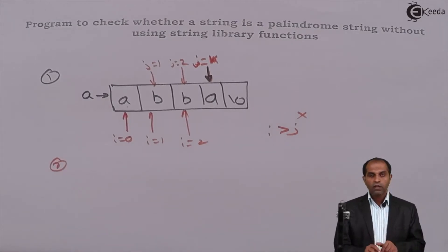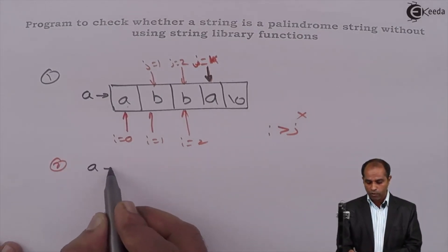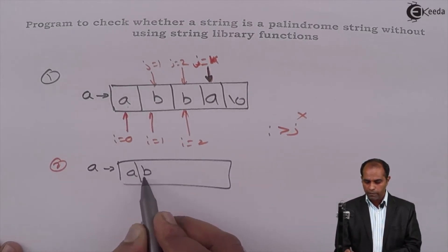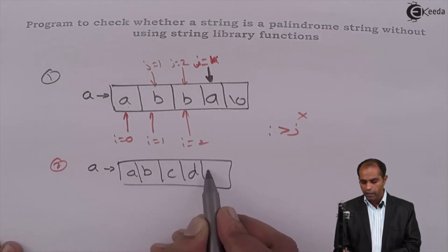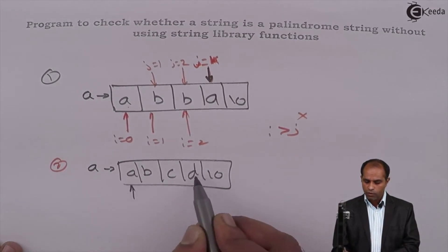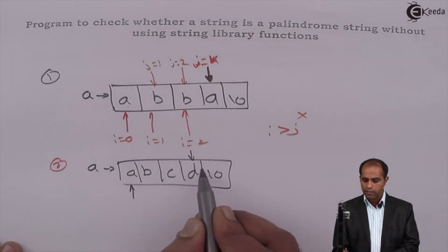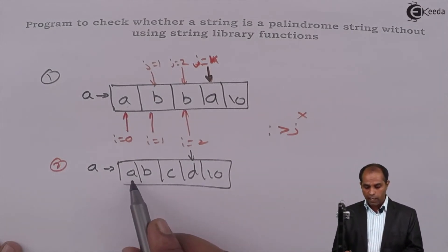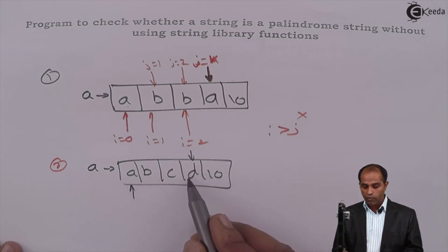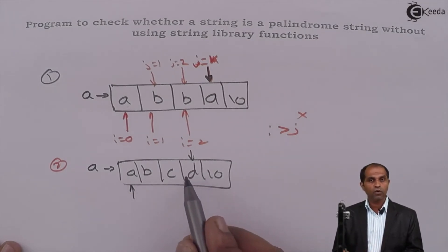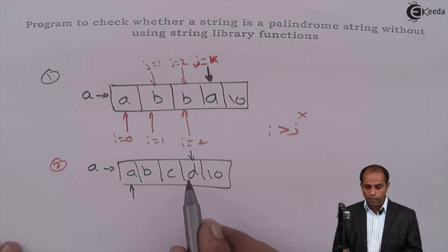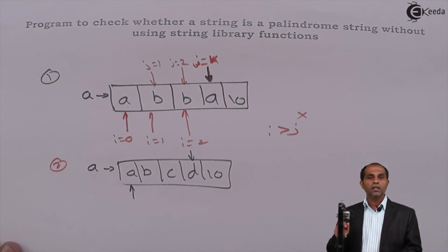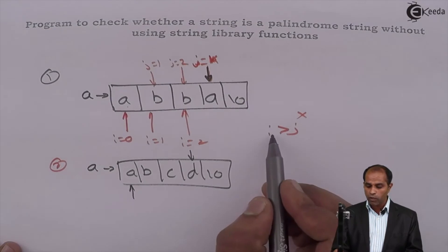Now this is for the example where a palindrome string was there. Suppose if I say a, b, c, d and null character. Now see, i is 0 and k is, say, 3. a[0] is 'a', a[3] is 'd'. Do they match? No, they don't match. They mismatch. If they mismatch, is it worth to continue this particular operation? No. So it means that if you find that there is a mismatch, stop. Don't wait till your i takes over j.